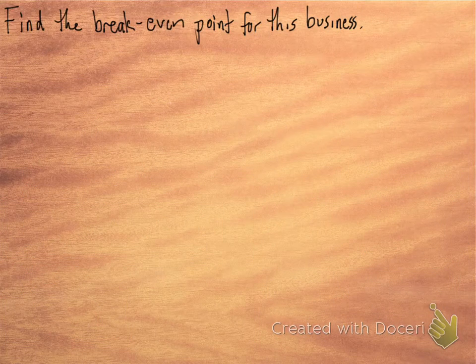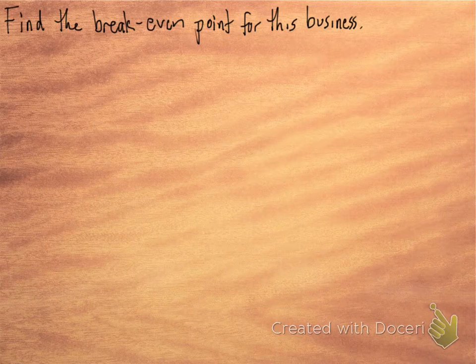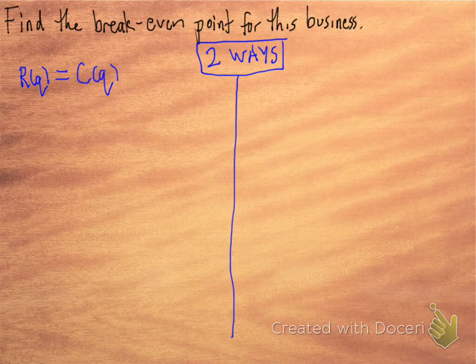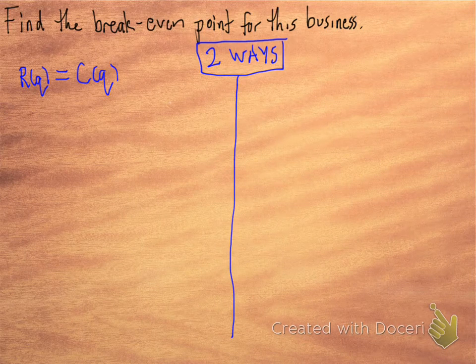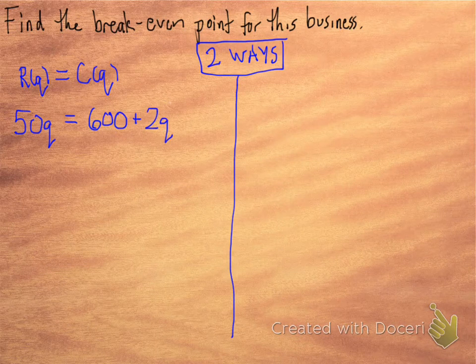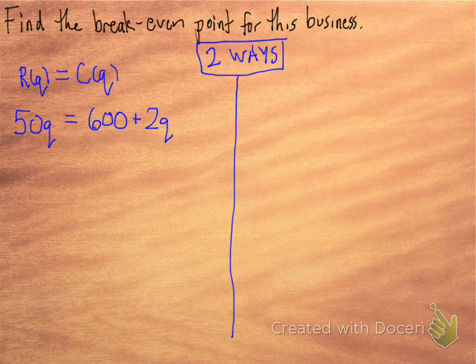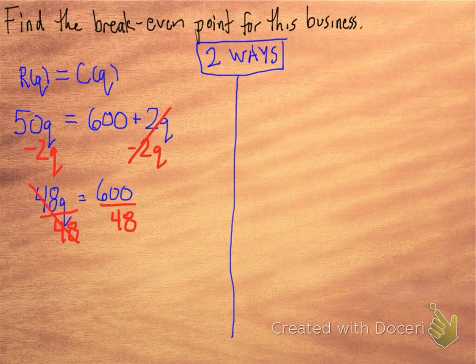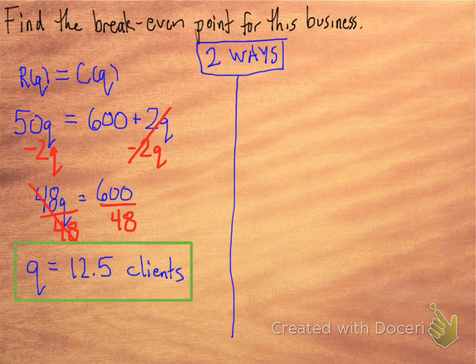Now let's find the break-even point for this business. There are two ways to find the break-even point. You can look at when the revenue is equal to the cost, or when the profit is zero. The first one we're going to check out is when the revenue is equal to the cost. So you just remember your two equations from the previous slide, plug them in here, do a little bit of algebra, solve for Q, and there you go: 12.5 clients.